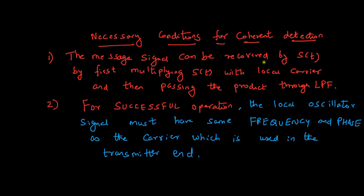Before understanding how Costa's receiver works, we must understand how coherent detection works and what the necessary conditions are for efficient coherent detection. In coherent detection, the message signal can be recovered from the modulated wave S of T — in our case the DSBSC wave — by first multiplying it with a local carrier and then passing the product to a low-pass filter.